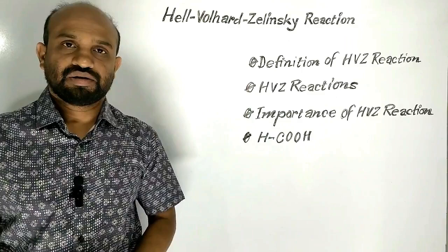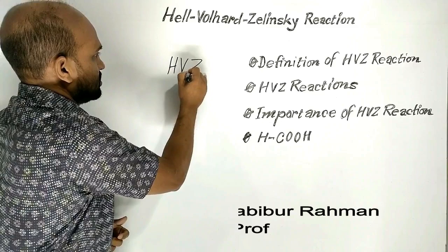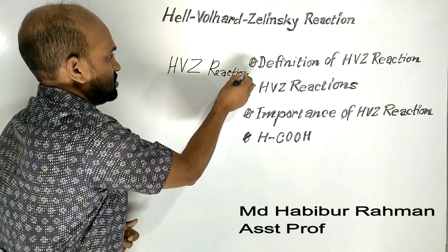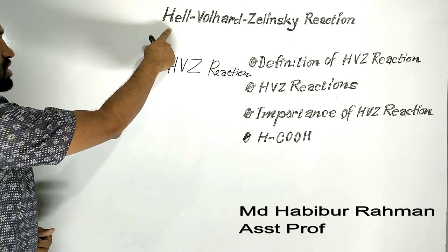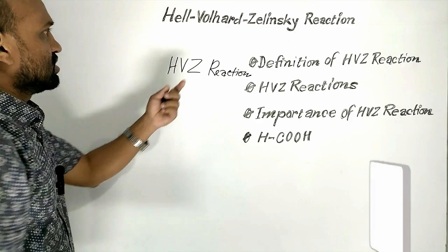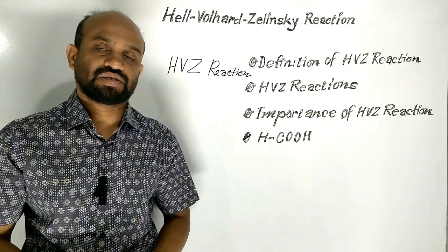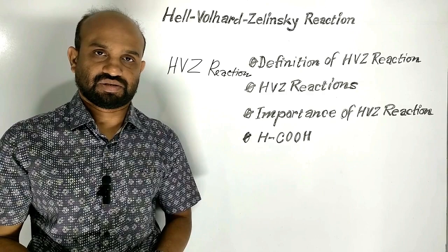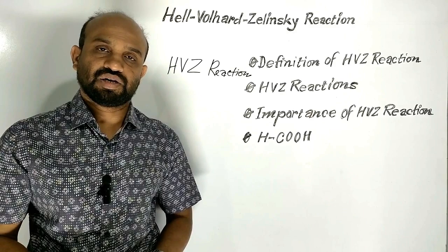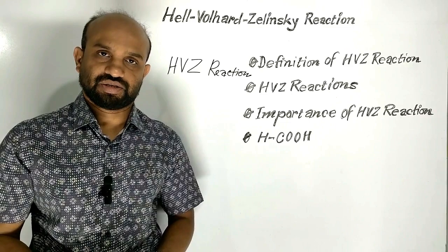The Hell-Volhard-Zelinsky reaction, in short the HVZ reaction, is named after three chemists: two German chemists, Von Hell and Jacob Volhard, and Russian chemist Nikolay Zelinsky.